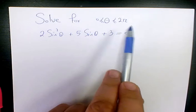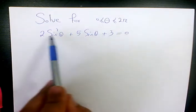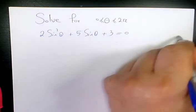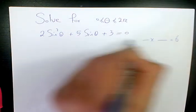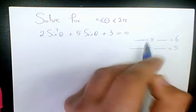I'm going to use the AC method for factoring. So 2 times 3 is going to be 6, and here we have positive 5, so we're looking for two numbers that add to 5 and multiply to 6.